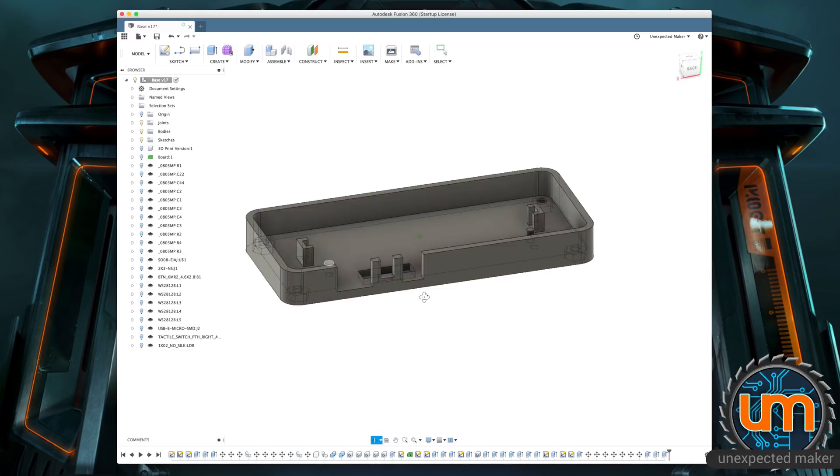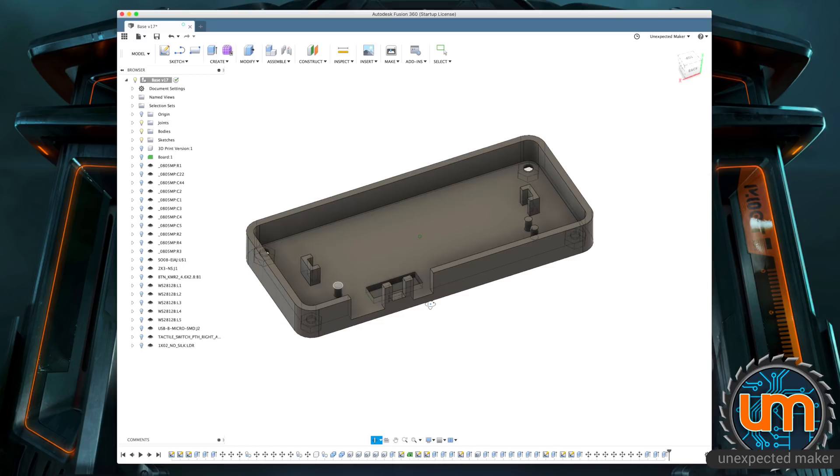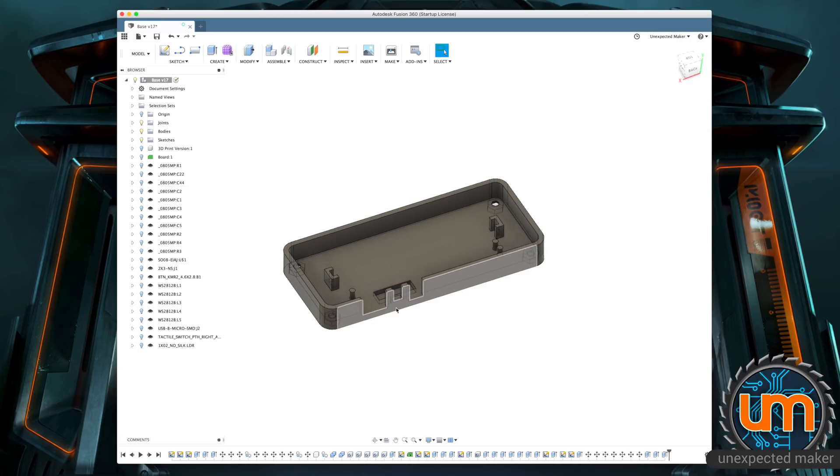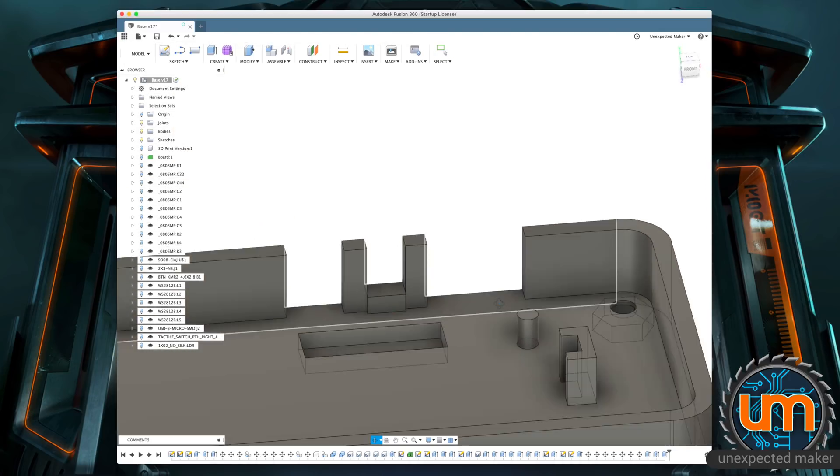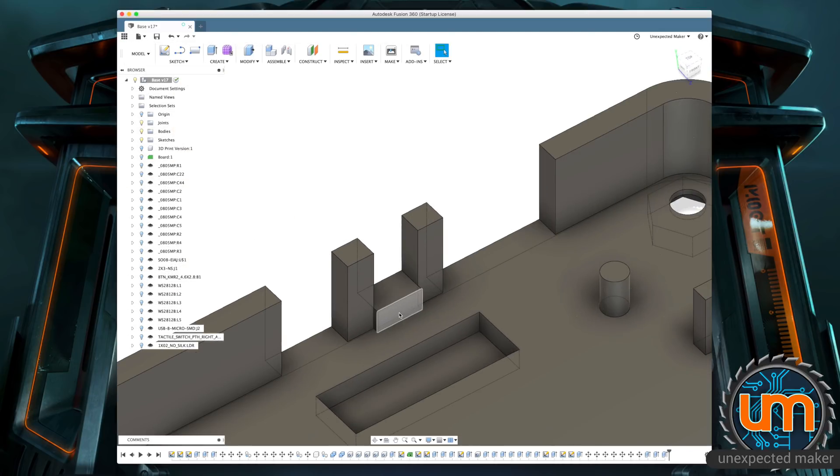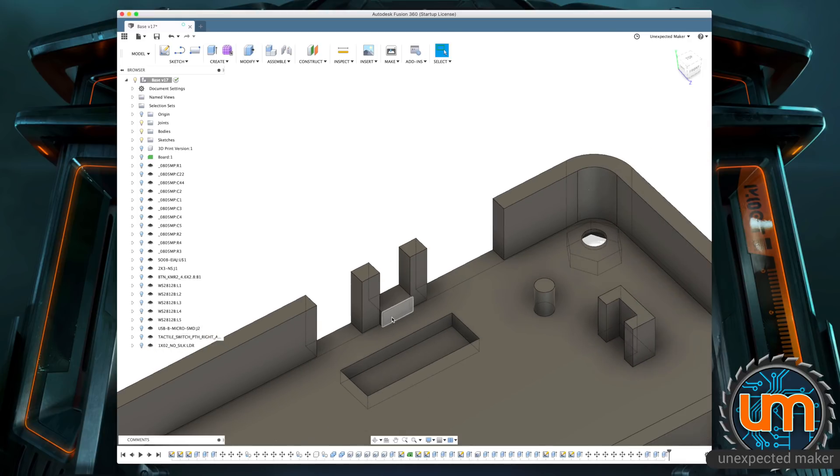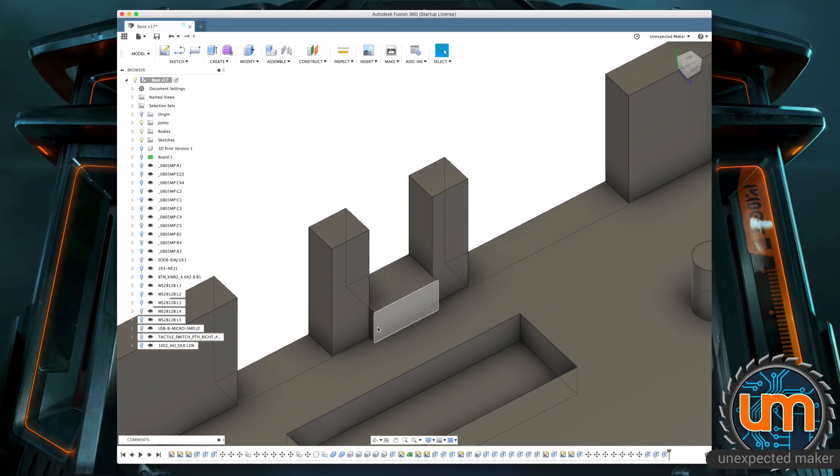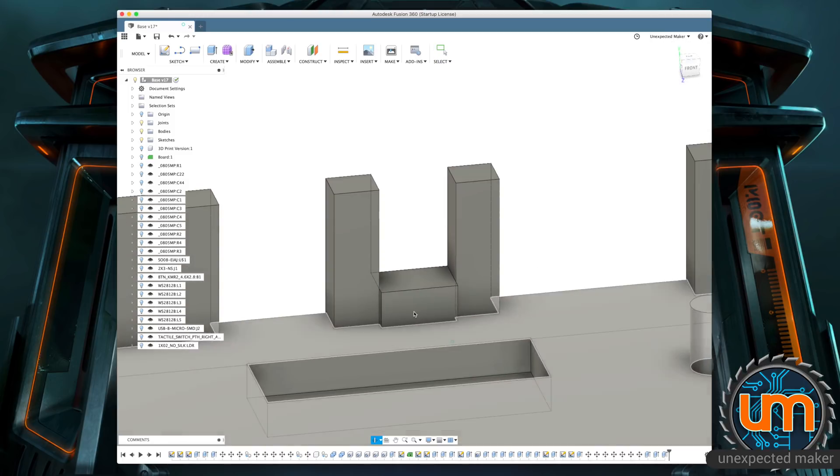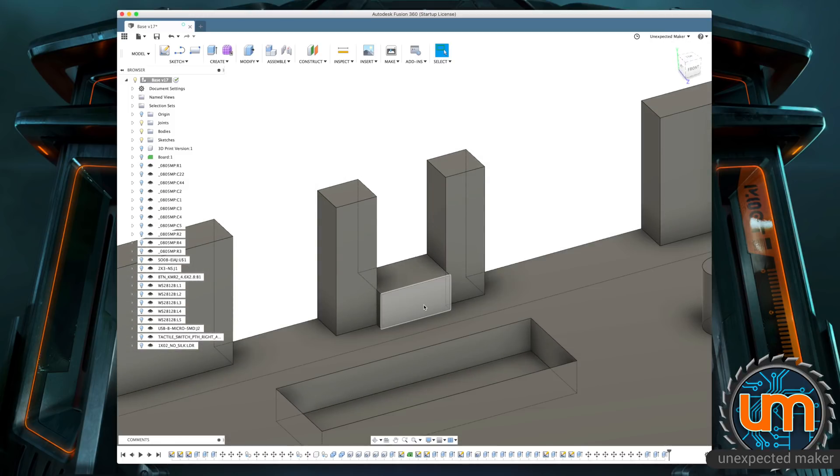There was a couple of things I wanted to do on this base. One thing I noticed from a cleaning up the 3D print point of view - just this section here that sits around the button. Just having this face sticking out a little bit, it's a little bit awkward for the printer to print. So I'm going to move that face to line up with the others.